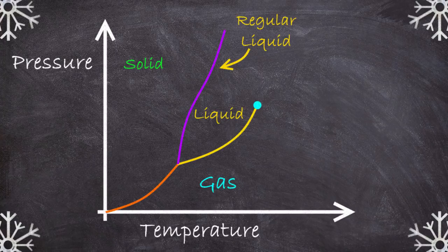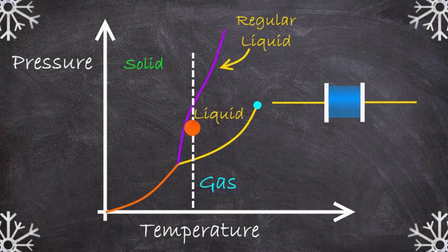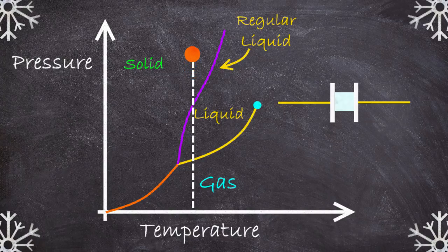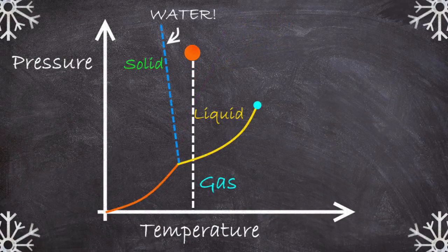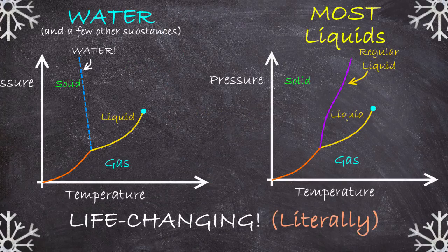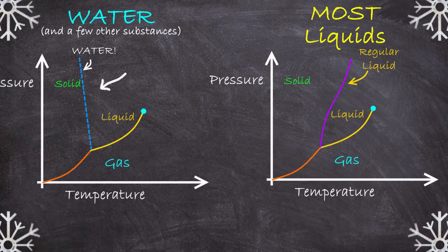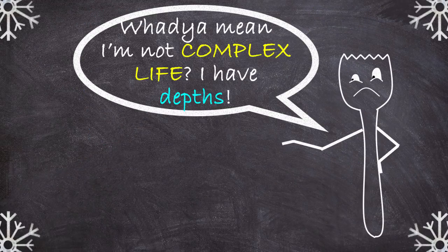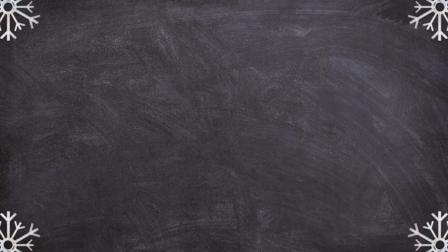The normal way of things is that if I hold a liquid substance at a constant temperature and I just squeeze it, cranking up the pressure it's under more and more, it'll become a solid. For the vast majority of substances in the cosmos, that's how things are supposed to go. The consequences of this difference are literally life-changing. And that's because without this property, there is a very real chance that complex life on our planet would not even exist.